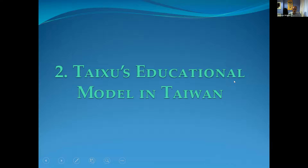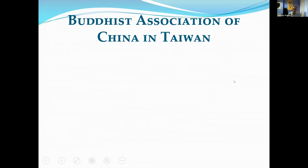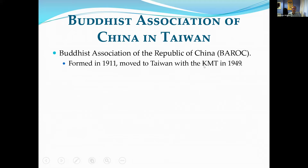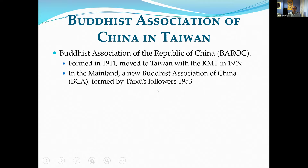Tai Xu's educational model was passed on to Taiwan. The Buddhist Association of the Republic of China — the BAROC — which Tai Xu had been involved with on the mainland since its formation in 1911, moved to Taiwan with the Nationalist government, the Kuomintang, in 1949 at the end of the civil war. Meanwhile in the mainland, some of Tai Xu's followers set up the Buddhist Association of China. So at this point, what happens in China and what happens in Taiwan go slightly different ways, even though BAROC was a common route for both.